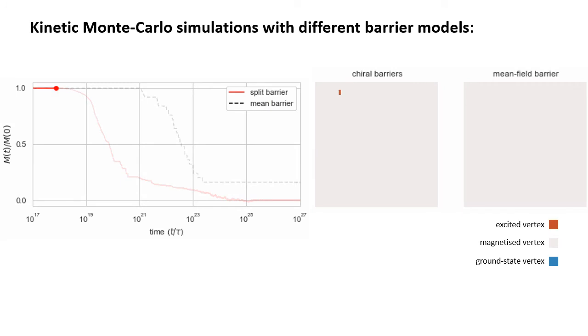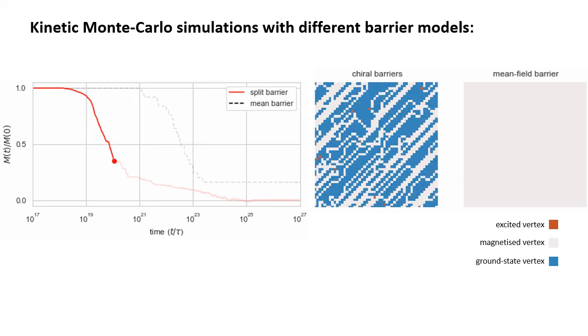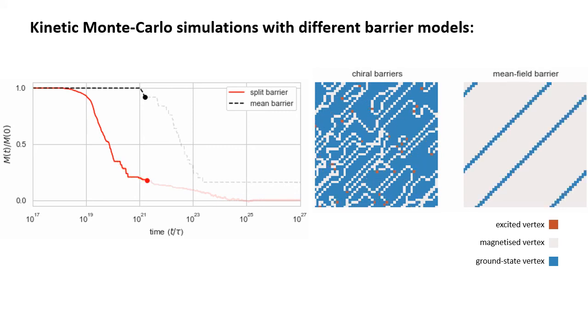To show this, we performed kinetic Monte Carlo simulations of the evolution of artificial square ice. Shown in red, the system with chiral barrier splitting relaxes earlier and evolves faster compared to the corresponding mean field model shown in black.